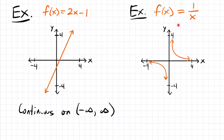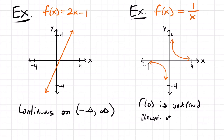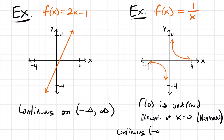Looking at f(x) = 1/x, it's a different story. From the graph, at x equals zero we have a vertical asymptote where the limit doesn't exist and the function is never zero. No matter what, plugging zero into this function gives an undefined value. So f(0) is undefined, meaning we have a discontinuity at x equals zero. This is non-removable because there's nothing we can do to the function to remove that discontinuity. The function is continuous on the interval negative infinity to zero, not including zero, union with zero to infinity.